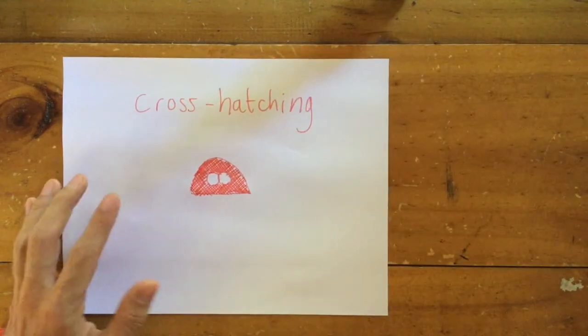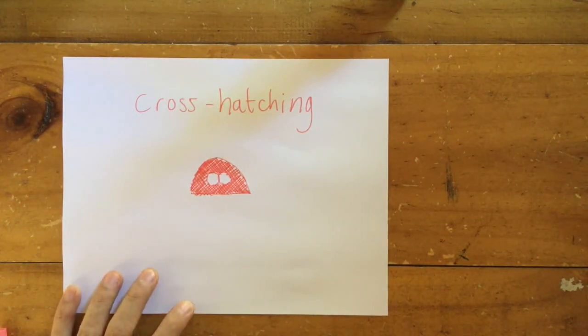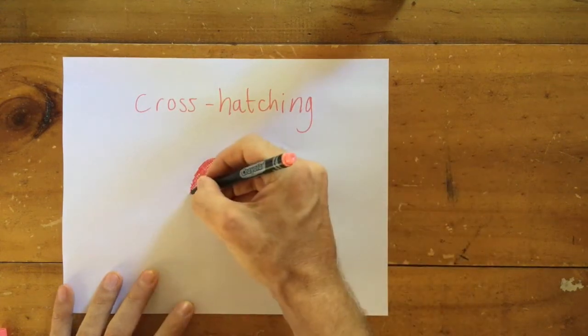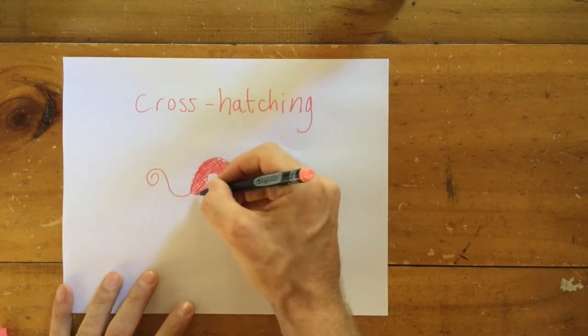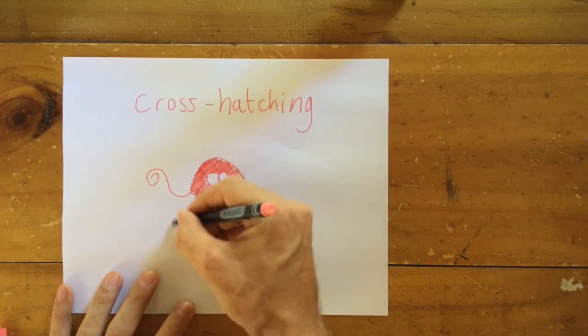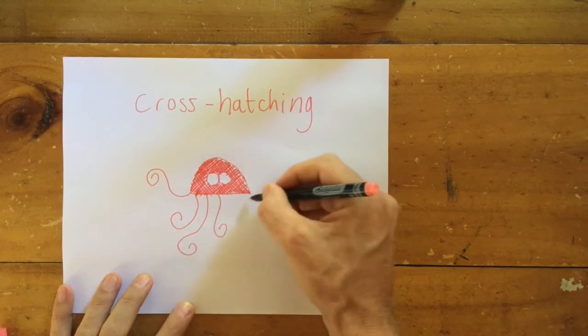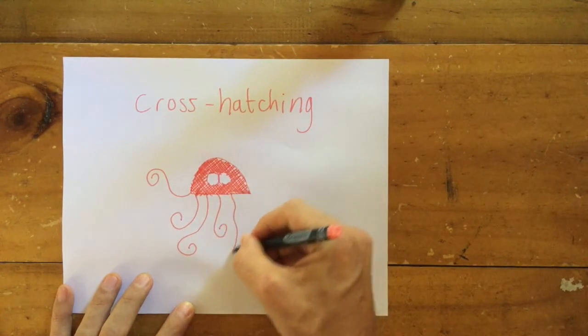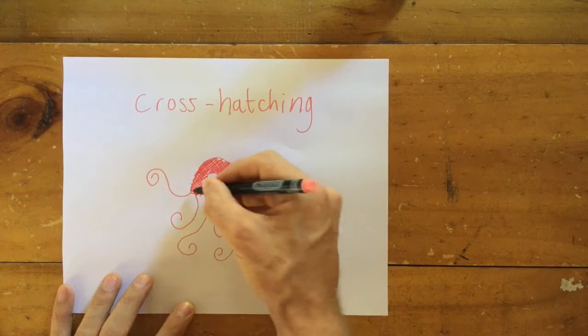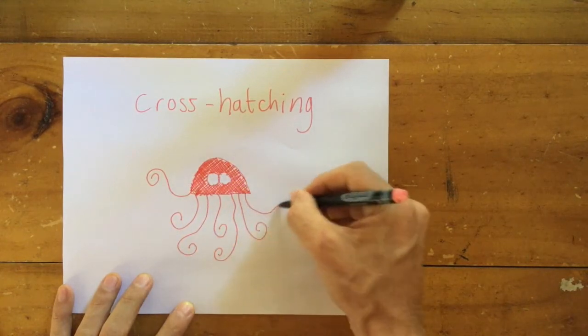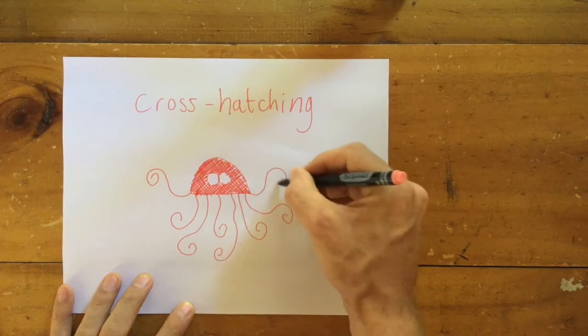There's a special name for that technique. It is called cross hatching. Just in case you were wondering. So what's this thing going to turn into? Maybe you can tell with the next thing I add. Some squiggly lines. How many squiggly lines? One, two, three, four, five, six, seven, eight.